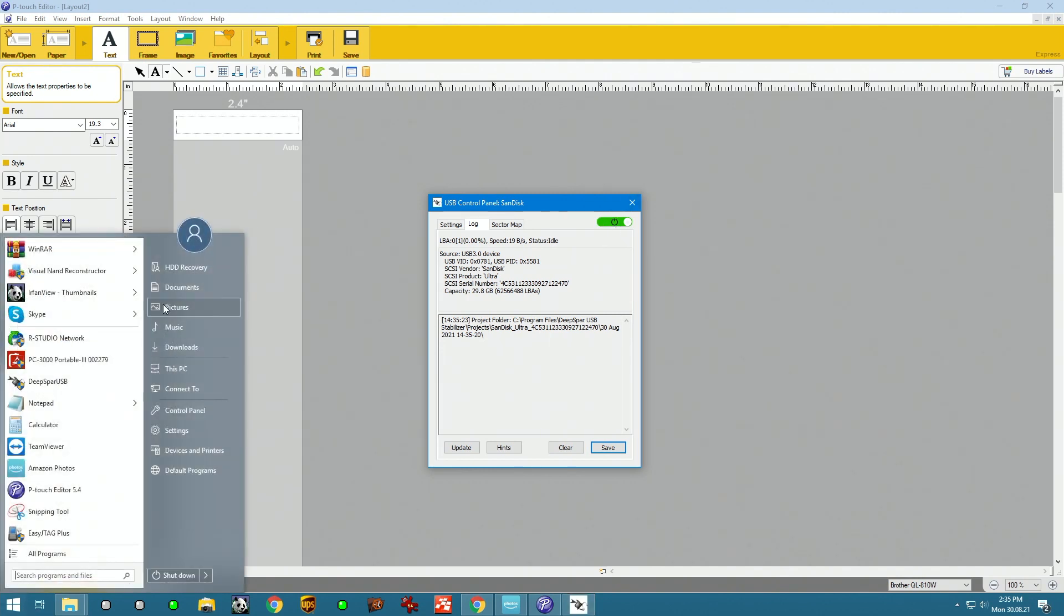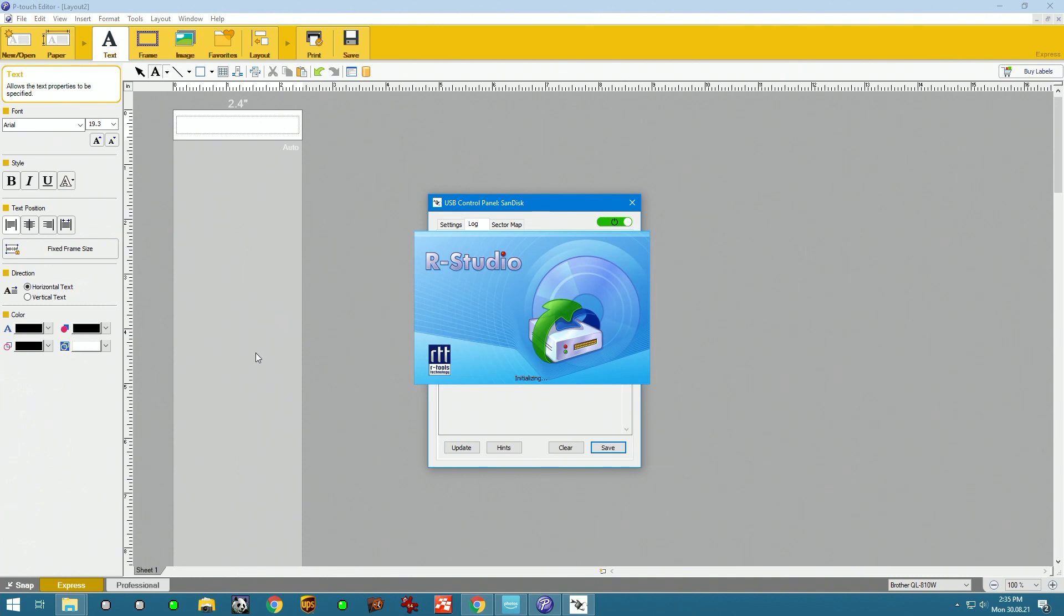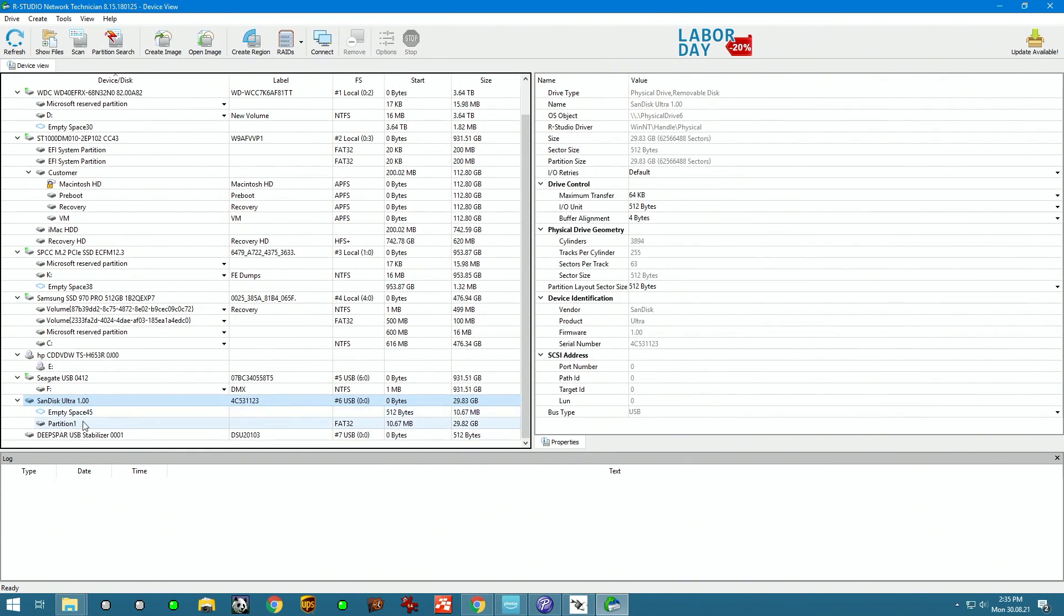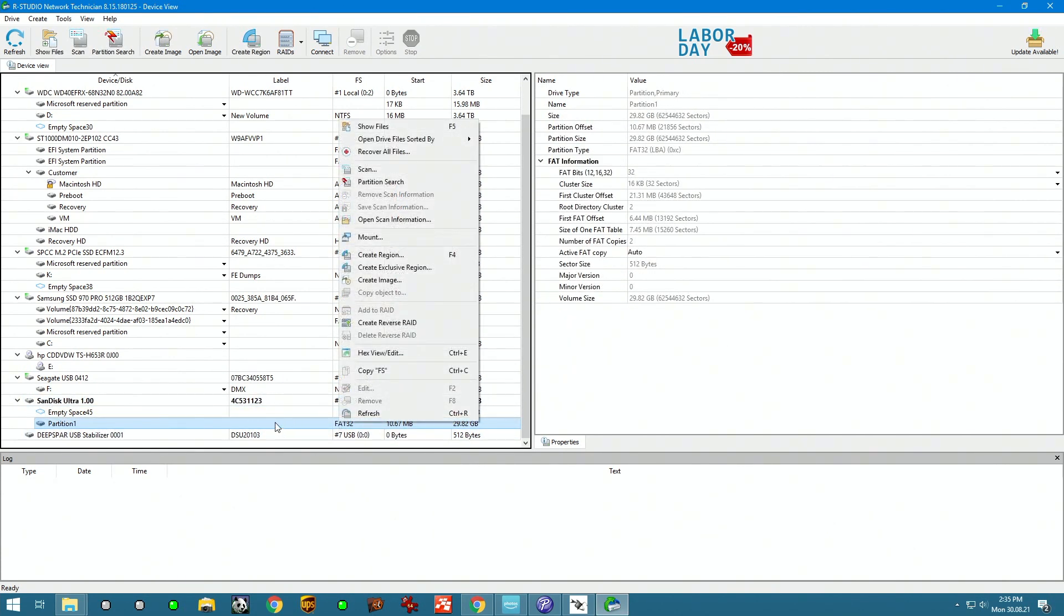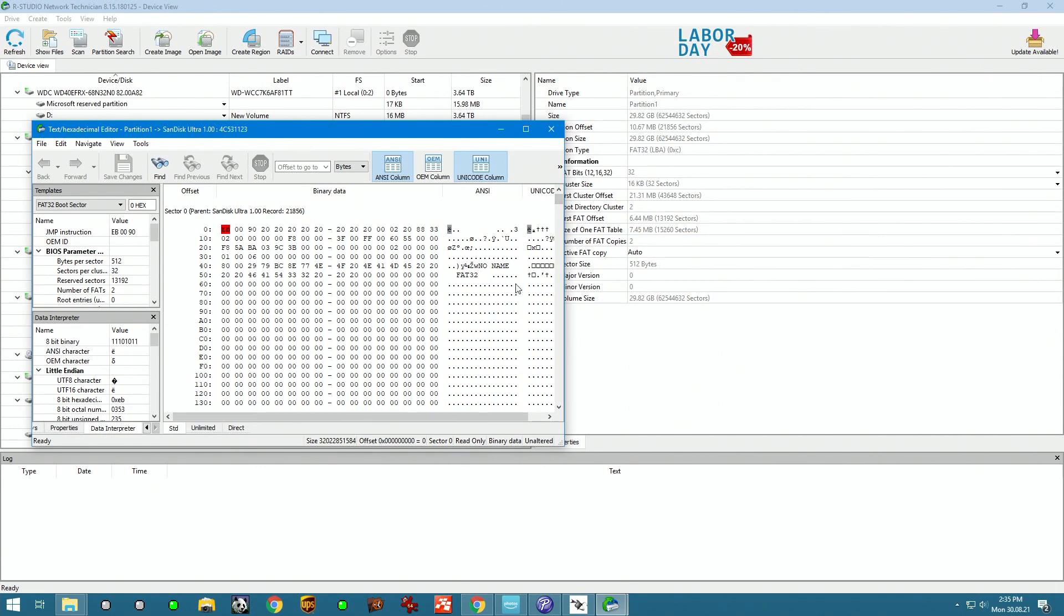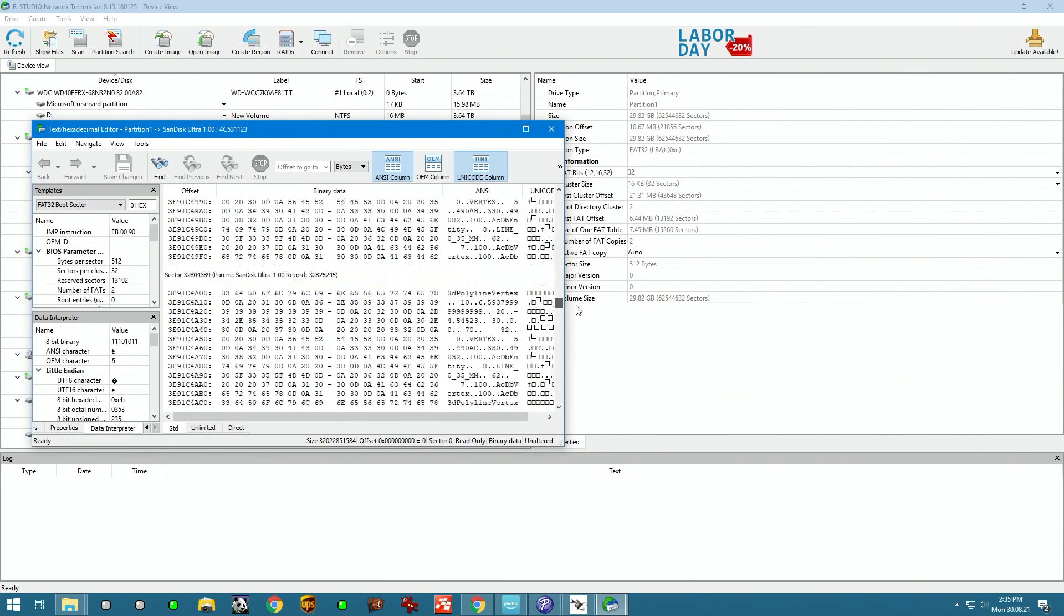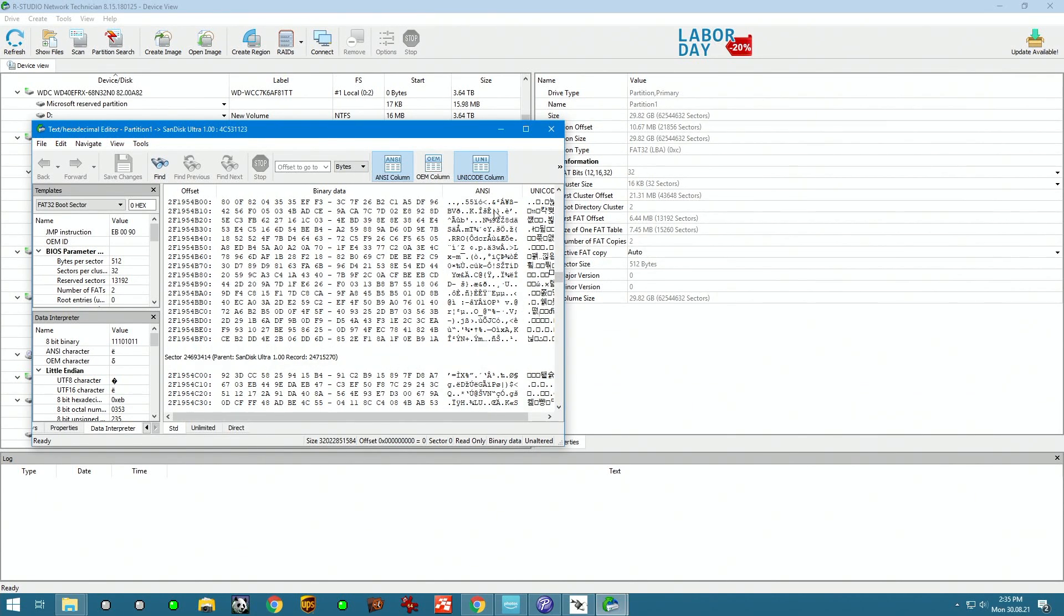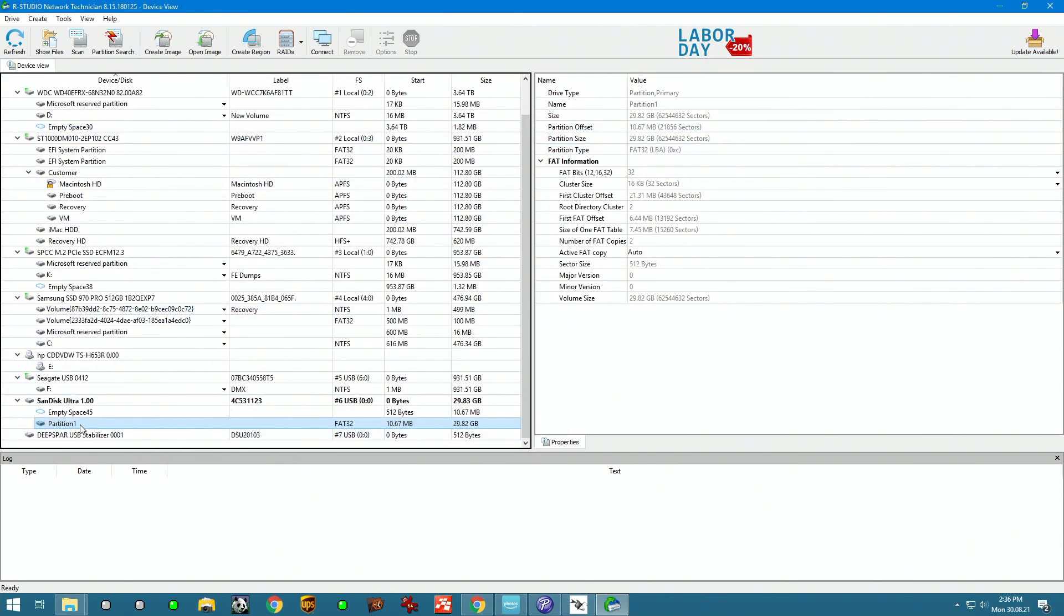If we go into our studio for example, we have the SanDisk Ultra right here with the FAT32 partition. If we go into hex view and edit, we'll be able to see that it's a functional device and it's got data on it because all of this means something. Now it's just a matter of cloning this thing out.